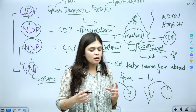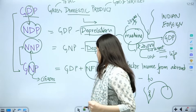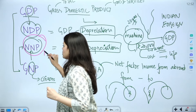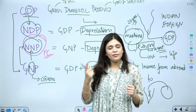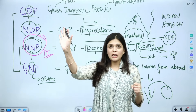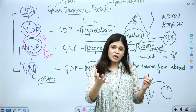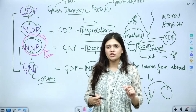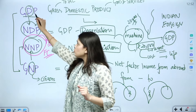The purest form of national income is NNP at Factor Cost. It is the purest because depreciation has been adjusted and NFIA has been adjusted. It is at factor cost, meaning the actual cost of production that the producers incur. This is why it is also written simply as NI — National Income.